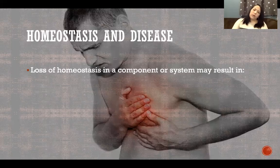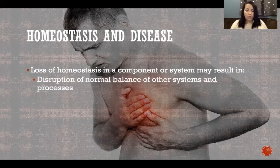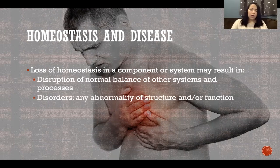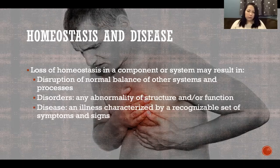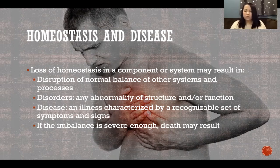Loss of homeostasis in any component or body system is going to cause some kind of problem. It could be disruption of the normal balance of other systems and processes, disorders — any abnormality of structure or function — disease, which is a more severe illness characterized by a recognizable set of symptoms and signs, and if the imbalance is severe enough, death. Think of the four D's: disruption, dysfunction, disorders, disease, and death if homeostasis is disrupted.